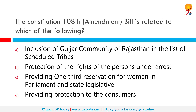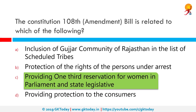The Constitution 108th Amendment Bill is related to which of the following? It is related to providing one-third reservation for women in parliament and state legislatures. Commonly known as the Women's Reservation Bill, it seeks to reserve one-third of all seats for women in the Lok Sabha and state Legislative Assemblies. Introduced by the UPA-1 government in May 2008, it also provides that one-third of the seats reserved for scheduled castes and scheduled tribes shall be reserved for women of those groups.